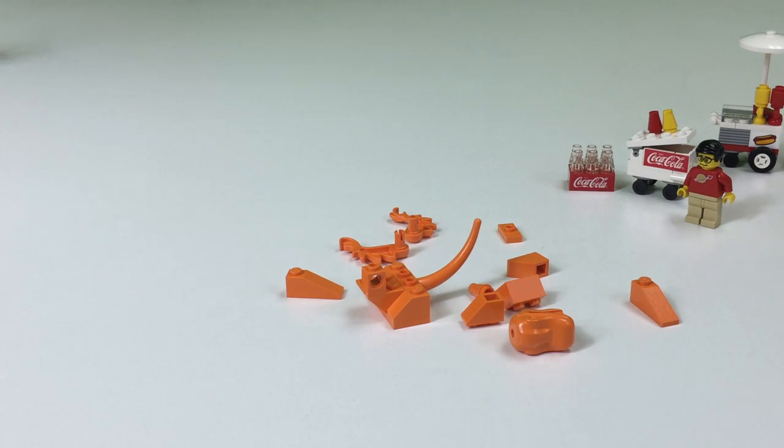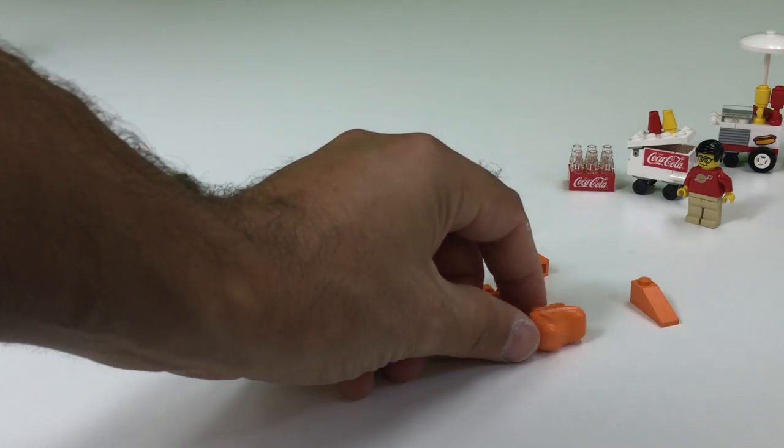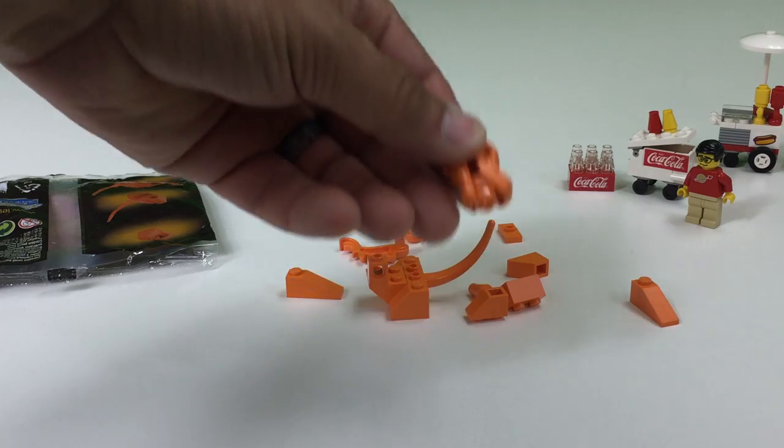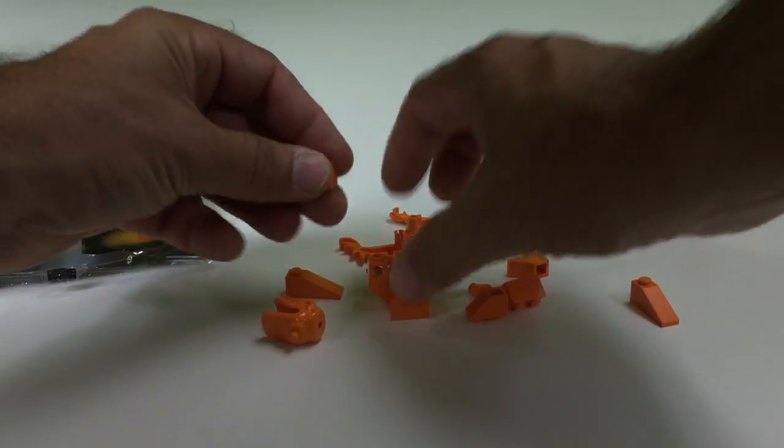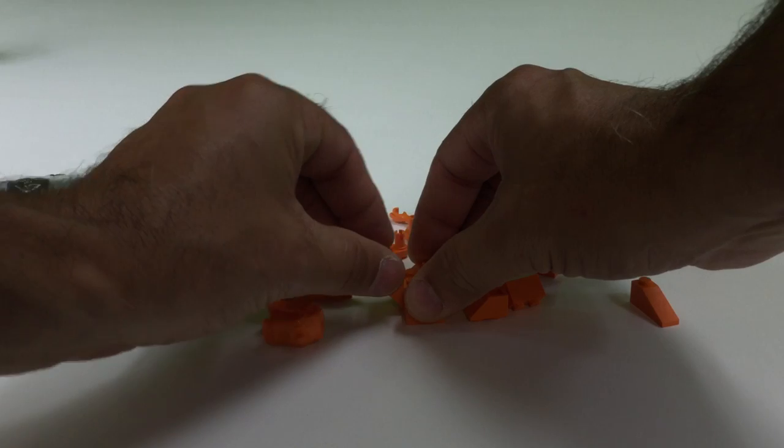Alright, I'm missing a piece. Building the polybag. Oh, he's in his mouth. He ate the one by one. That's where it went. That's hilarious.